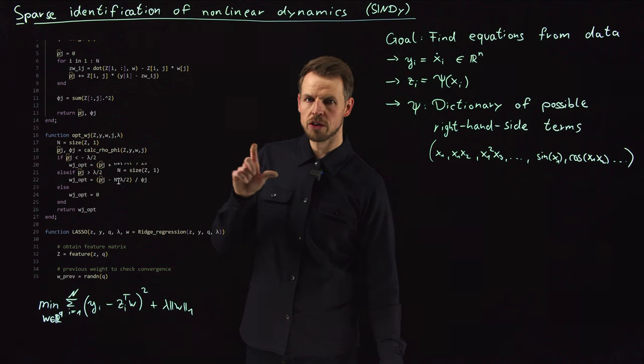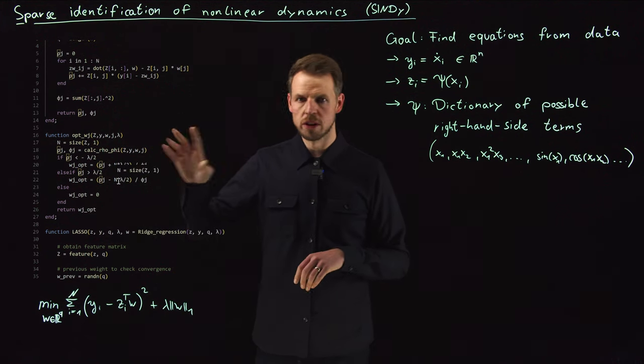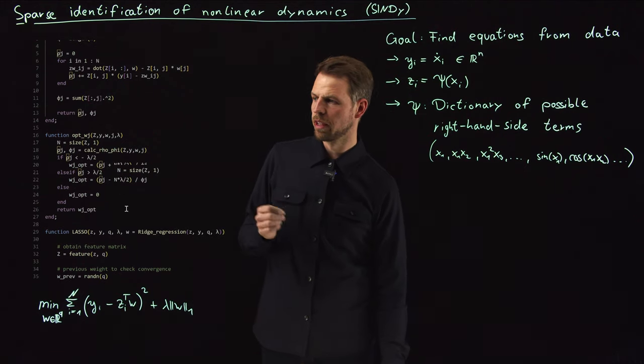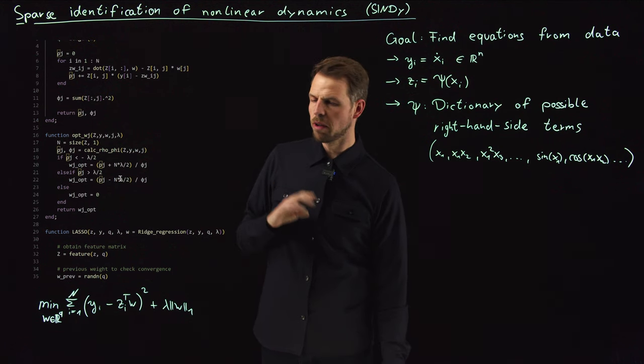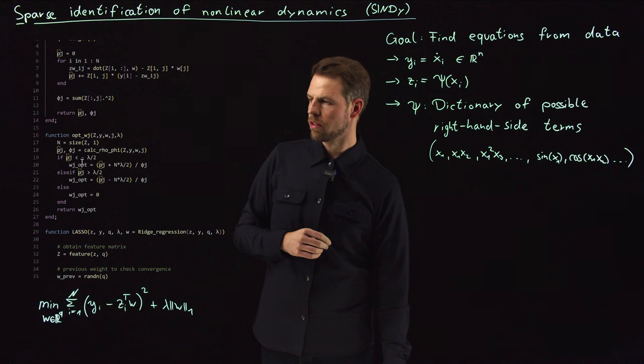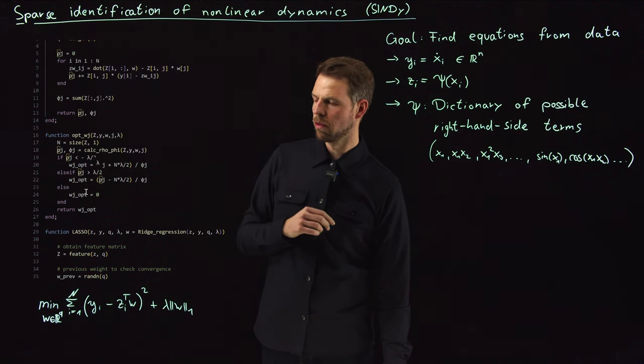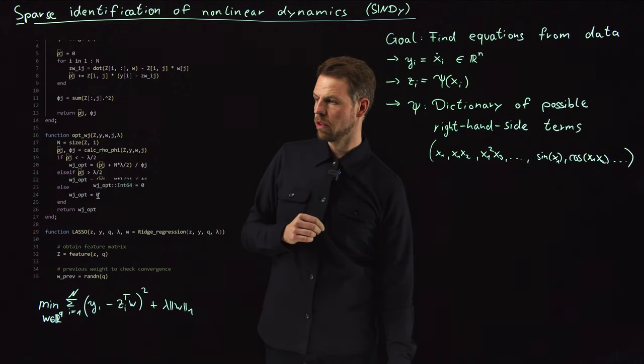If it is greater than lambda plus lambda over two, you get this rule for the regularization. Here's an additional n term because we did not talk about one over n. I've done one over n in the code to scale the two appropriately and to get more independent of the data. If it's not smaller than minus lambda over two or not greater than lambda over two, so it's in the interval, then the wjopt is zero.